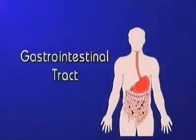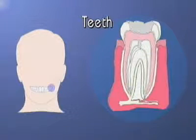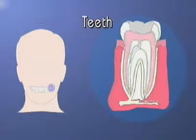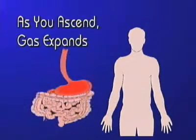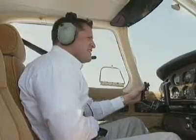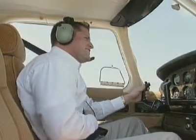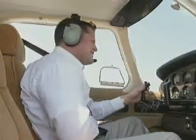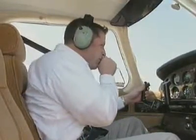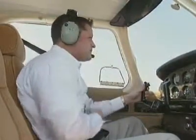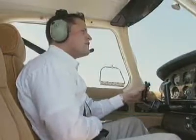During the ascending phase of a flight, you are more likely to develop problems in the gastrointestinal tract. In rare occasions, teeth may also be the source of gas expansion problems. As you ascend, gas expands in the stomach and the intestines, which can cause abdominal pain and in severe cases may even cause fainting. The human body has two avenues that allow gas to escape: burping and flatulating, commonly referred to as passing gas.